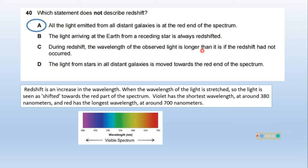Let's read the other options. Option B says light arriving at earth from a receding star is always redshifted. Yes, because the receding star is going away from earth so wavelength is stretched. During redshift, the wavelength of observed light is longer than it is if redshift had not occurred. Yes, right. The light from stars in all distant galaxies is moved toward the red end of the spectrum. Option A says all light emitted from all distant galaxies is at the red end of the spectrum. This does not describe redshift. Option A is the right one.